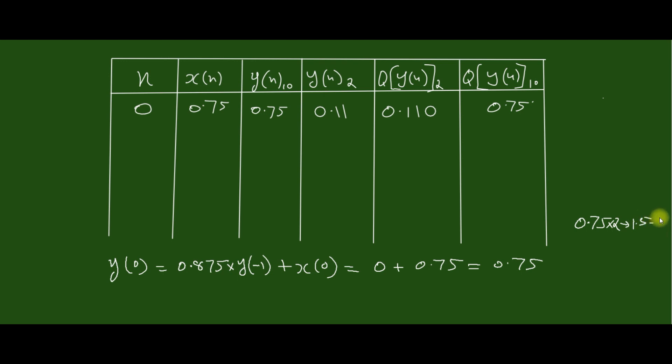Now we are converting this into binary. 0.75 × 2 gives 1.5 with remainder 1, then 0.5 × 2 gives 1.0 with remainder 1. So the corresponding binary is 0.11. As given in the question, the number of bits is 4 including the sign bit, so it can be represented as 0.11. This is the quantized form, and the corresponding decimal is 0.75 itself.